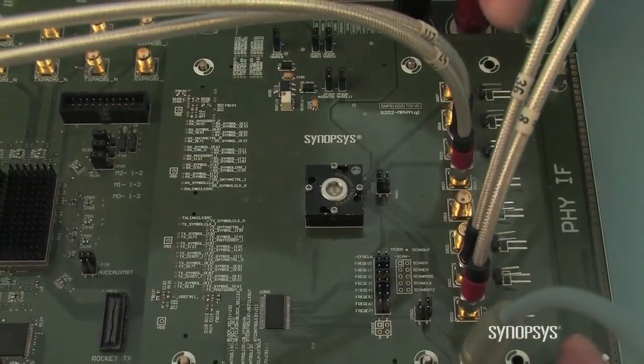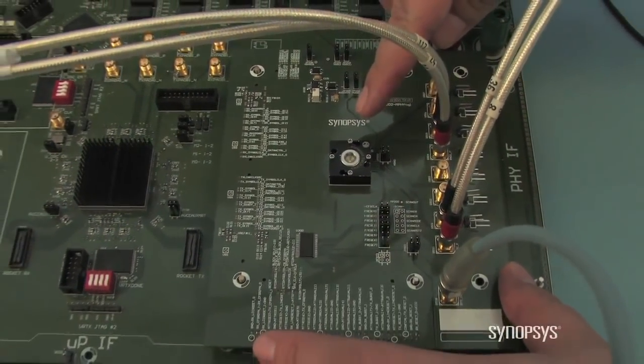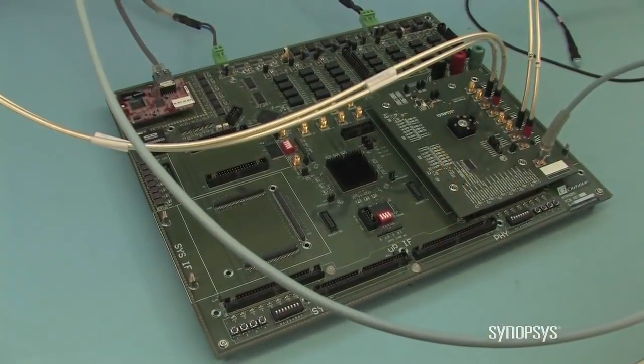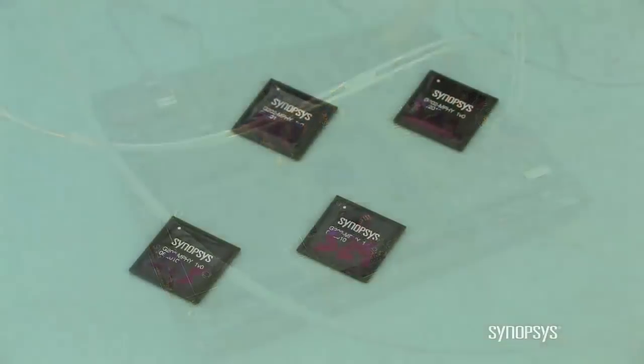The major component in this characterization system is the M-PHY test chip, which is mounted inside the socket of the M-PHY daughter card. As the test chip is not visible through the socket, you can see additional test chip samples here.